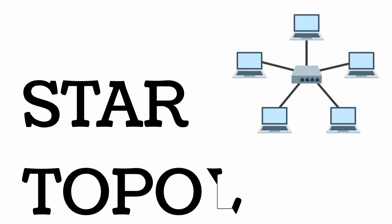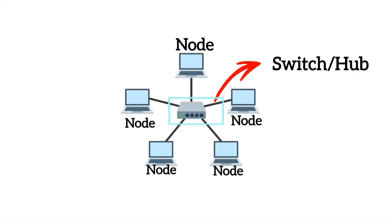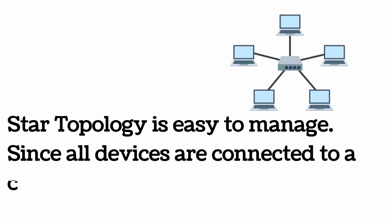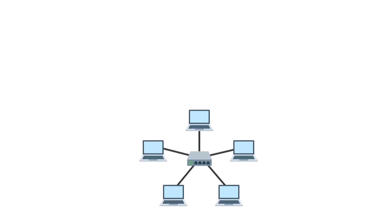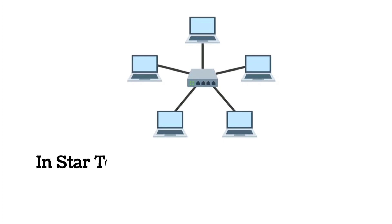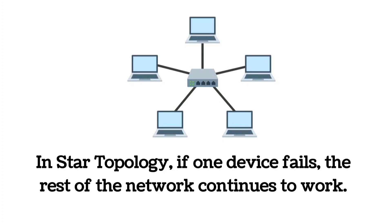Star topology: all computers are connected to a central hub or switch, where every node connects to a central node. All devices are connected to a single hub through a cable, and all other nodes are connected to this central node. Advantages: star topology is easy to manage and monitor; it is easy to add new devices without disrupting the network; and if one device fails, the rest of the network continues to work.